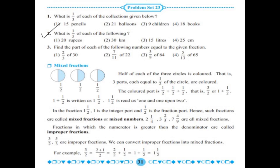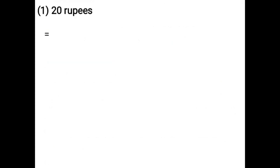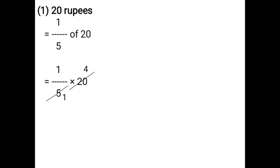What is 1 upon 5 of each of the following? 20 rupees. That is equal to 1 upon 5 of 20, that is equal to 1 upon 5 into 20. You can divide 20 by 5 or you can do the cancellation method: 5 ones are 5, 5 fours are 20, 1 four is 4. That is equal to 4 rupees.